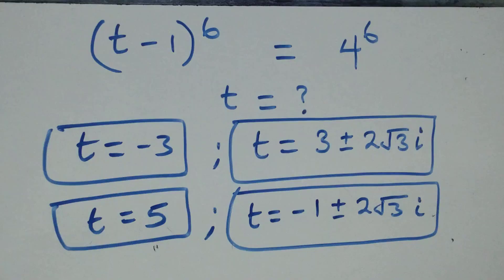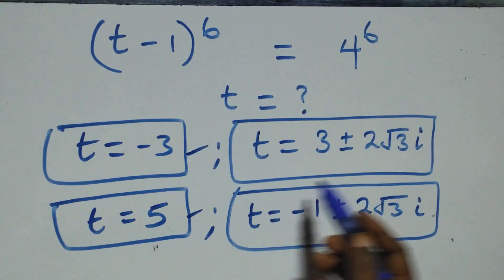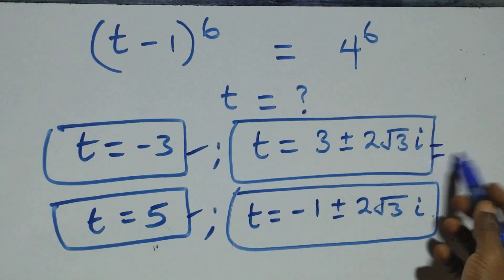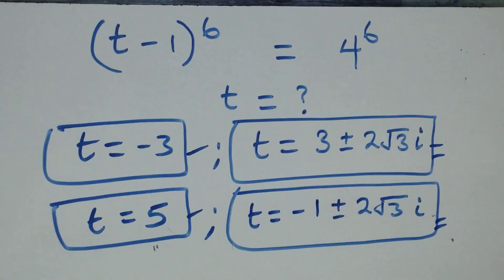Therefore, all together in this problem we have six solutions: two real solutions (t = −3 and t = 5), two complex solutions from the first case, and two complex solutions from the second case. Thank you for watching — don't forget to subscribe for more videos, turn on the notification bell, share this video, give a thumbs up, and see you in the next lesson. Bye for now!